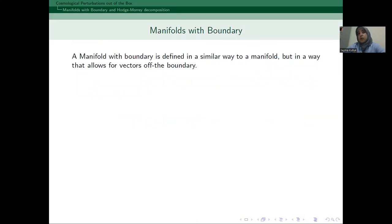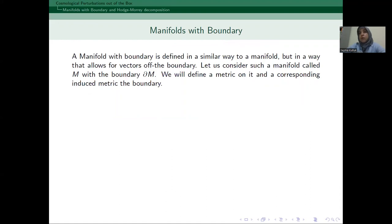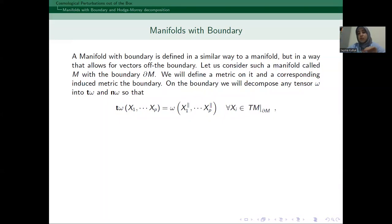But let me first describe what is a manifold with boundary. So, it's defined in a very similar way to a manifold, but it allows vectors at its boundary. Let us consider such a manifold called M with a boundary del M. And we define a metric on it and a corresponding induced metric on the boundary. Then what we do is that we decompose all the tensors on the boundary into tangential and normal parts.